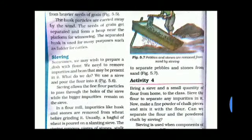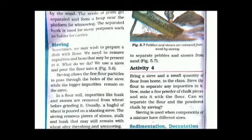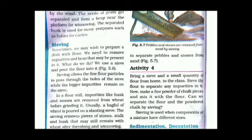Now we are going to look at the next method of separation, which is sieving. A sieve is used in many places. For example, when we prepare a dish using flour, we need to remove impurities and bran. We use a sieve and pour the flour into it. The sieve allows the finer particles to pass through the holes while the bigger impurities remain on the sieve.